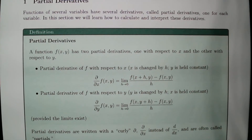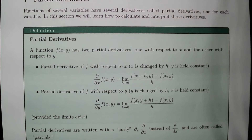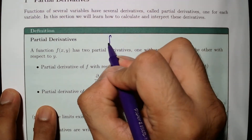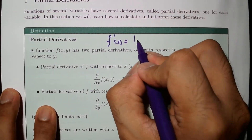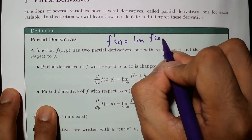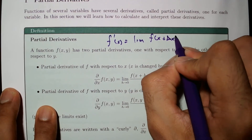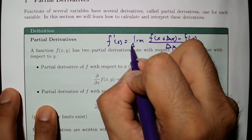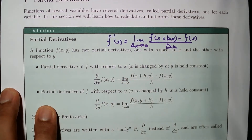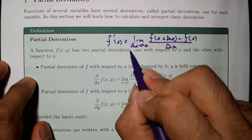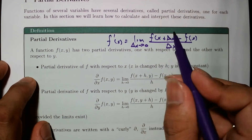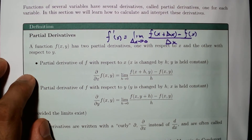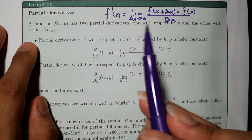Let's define them first. In Calc 1 you might remember the old formula: f prime of x equals the limit of f(x + h) minus f(x) divided by h, as h approaches 0. Different books use delta x or h — in our class we're going to use h.